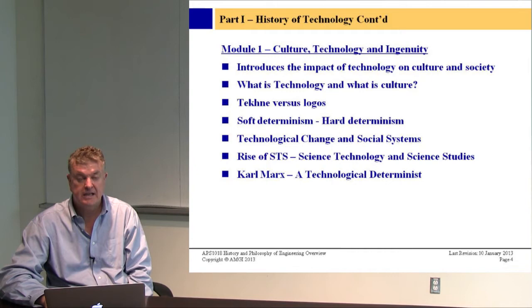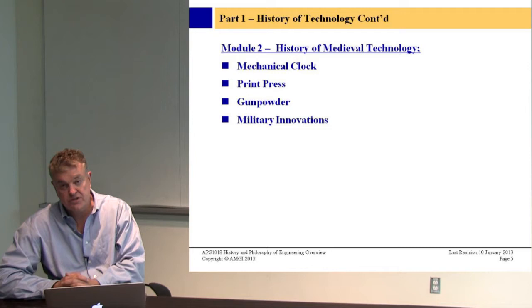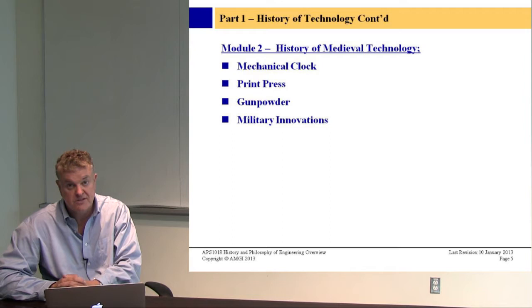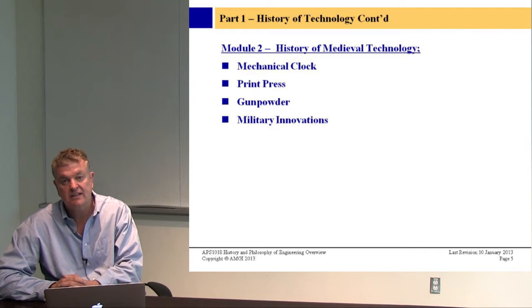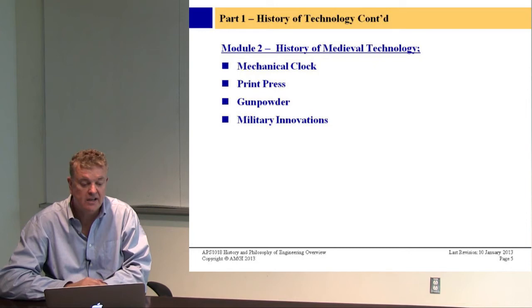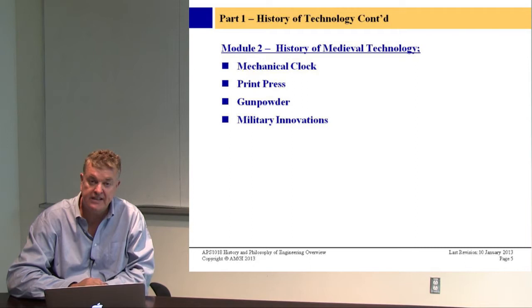Each of these modules could be entire courses or even whole degrees in their own right. Module two is the history of medieval technology — I've taken it as a full 14-week graduate course. We'll look at the mechanical clock and its impact on medieval society, the printing press and how it completely changed the order of society, leading to books and the sharing of knowledge. We'll also study gunpowder, which was invented in China in the fifth or sixth century and was never used as a weapon there — used for fireworks and even healing properties.